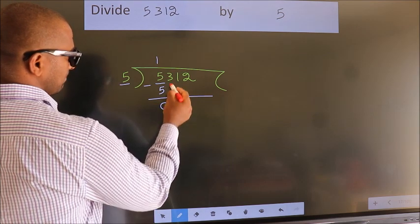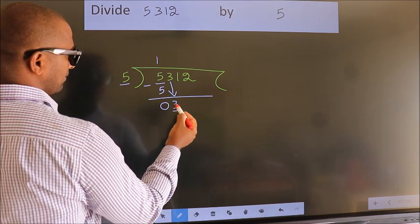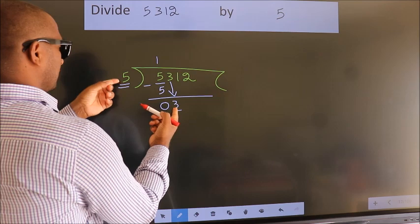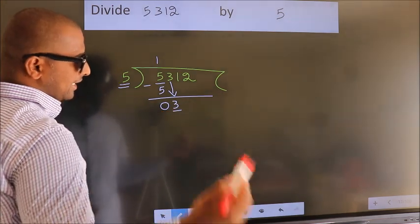After this, bring down the beside number, so 3 down. Here we have 3, here 5. 3 is smaller than 5, so we should bring down the second number.